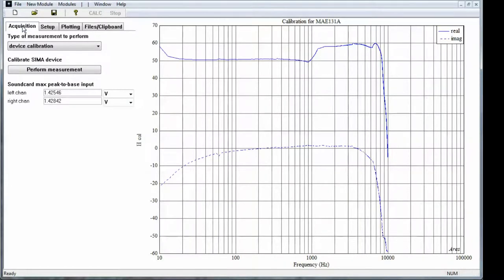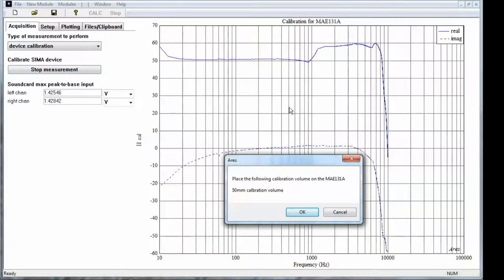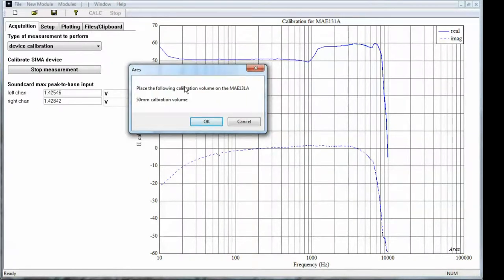Next, we'll go to the acquisition tab. There are two acquisitions that can be performed. One is a device calibration and the other is the actual impedance measurement. We're going to go ahead and do a device calibration just to show how it's done. So we've got the 131 selected already and set up. We're going to hit perform measurement. ARIES will communicate with electronics and then ask you to place the 50mm calibration volume on the 131.